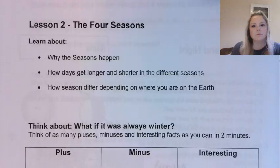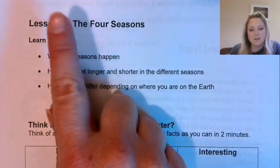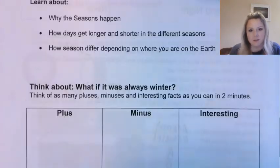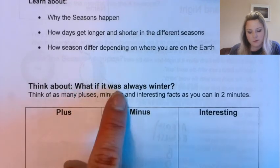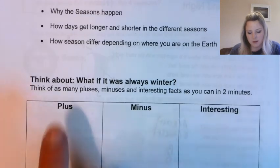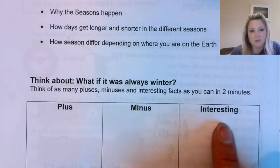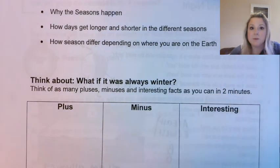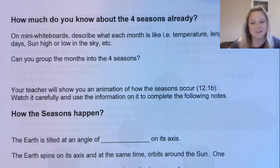If you turn to page 134 you can see what we're going to be looking at today: the four seasons. Just before I actually teach you how they happen, there's a little fun activity to get you thinking about different seasons. What if it was always winter? I'm going to ask you to pause the video so you can write down anything you think would be a positive or a negative if it was always winter. Pause now, fill that out on page 134, and then we'll move on.